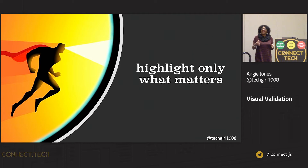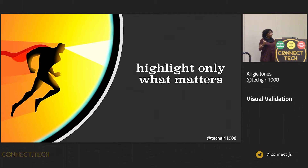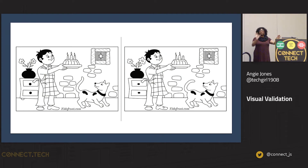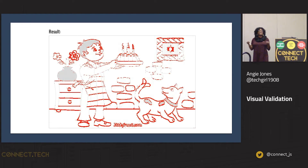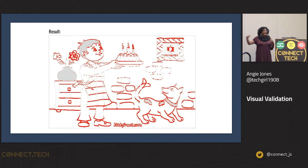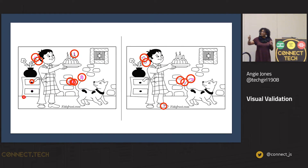Applitools has come out with a much more modern approach that uses machine learning to compare the images, so it's able to detect the changes that we would care about as human beings. I ran a spot-the-difference game through pixel-to-pixel comparison versus machine learning. Pixel comparison picked up every single thing — white shift changes, things we don't even notice. With Applitools, it highlighted only the things that we would have highlighted as humans.